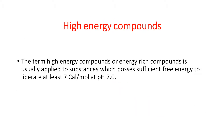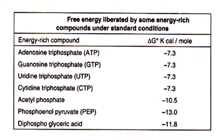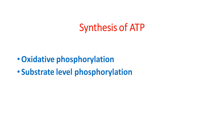High energy compounds, or energy-rich compounds, are substances that possess sufficient free energy to liberate at least 7 kilocalories per mole at pH 7.0. The table shows examples of energy-rich compounds, including ATP, acetyl phosphate, phosphoenolpyruvate, and phosphoglyceric acid. ATP can be synthesized by two ways: oxidative phosphorylation and substrate-level phosphorylation.